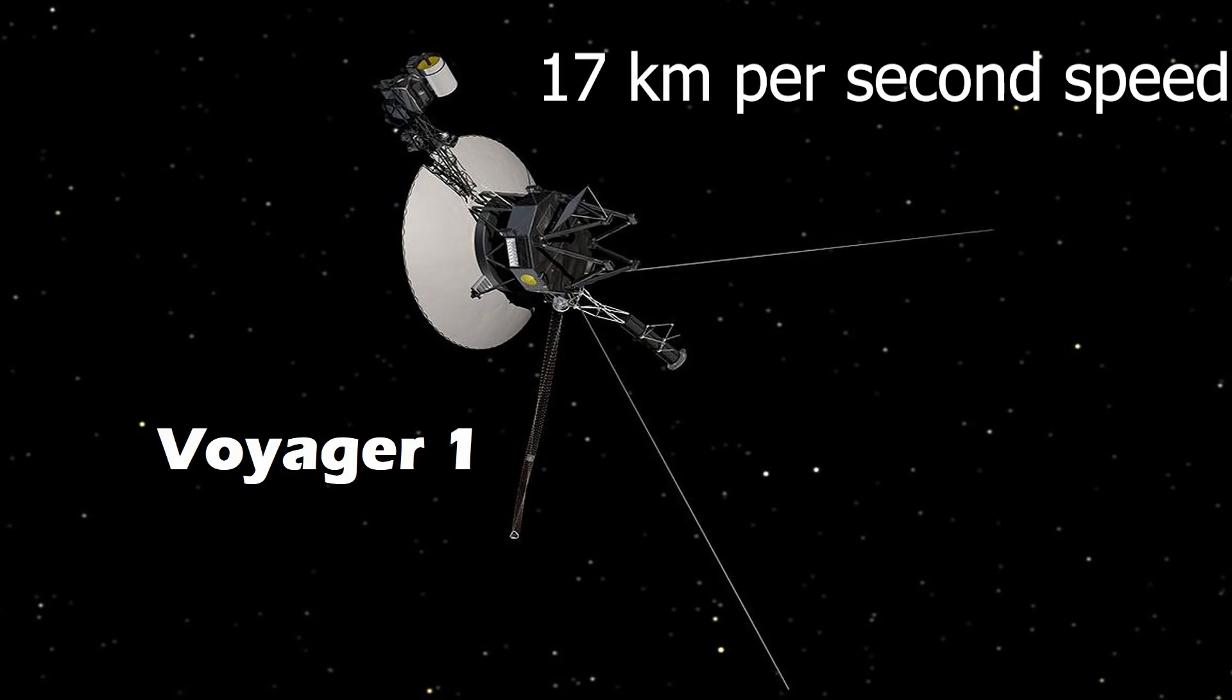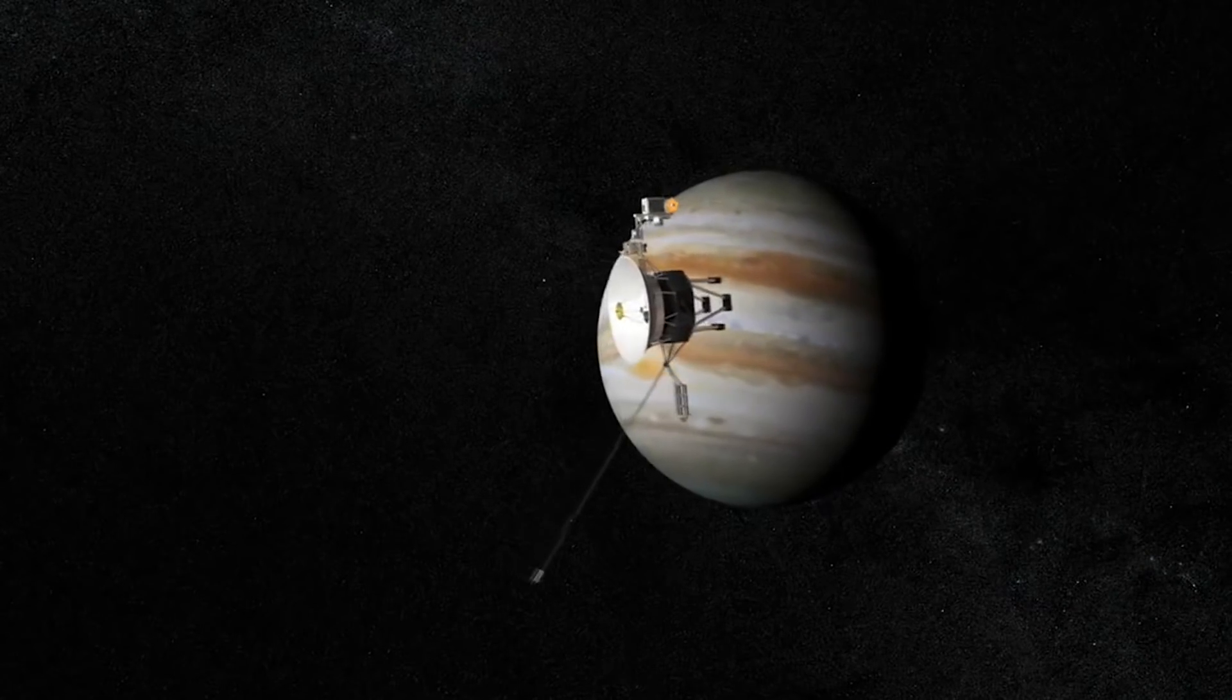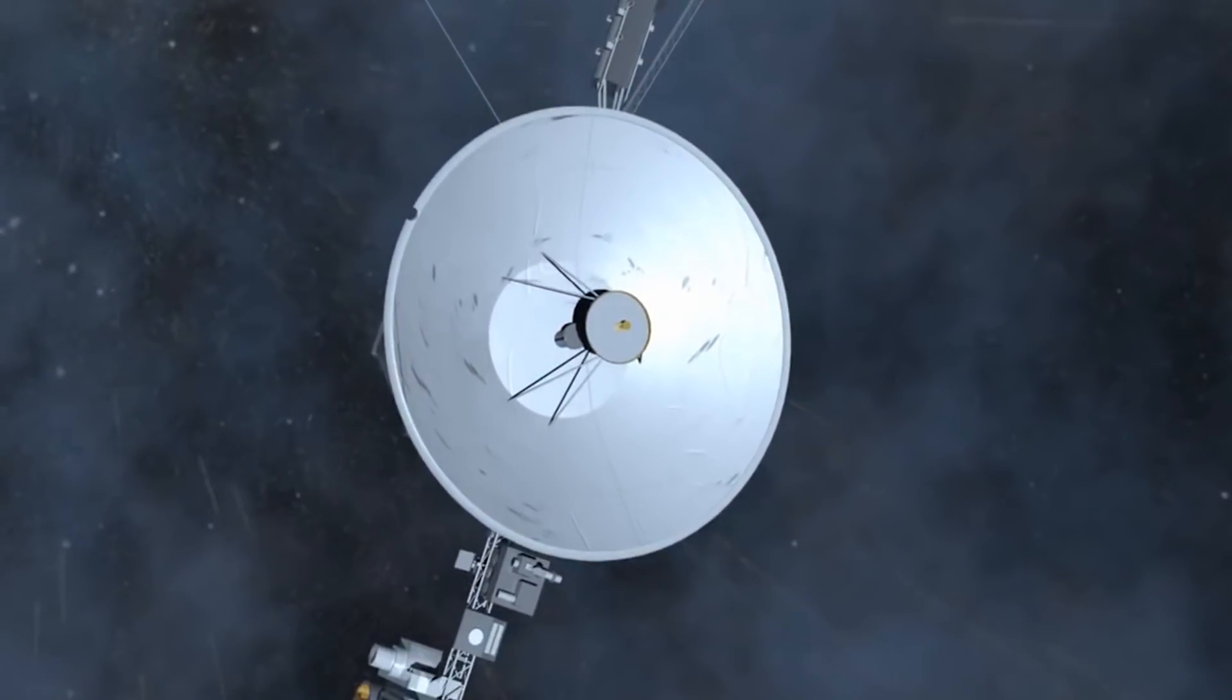Even the fastest spacecraft Voyager 1 took 3 years to reach Jupiter. So at first, we need a faster spacecraft for traveling to Jupiter. Then let's talk about the extreme conditions you need to face on Jupiter.